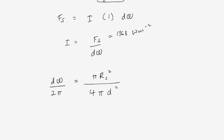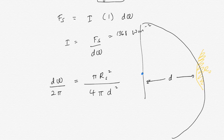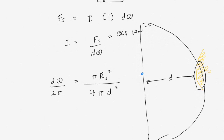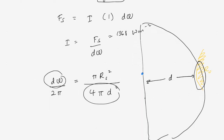Basically, the Earth is here, the Sun is here, this is the distance between the Sun and the Earth, and this is the radius of the Sun. The fraction of the sky covered by the Sun as seen from Earth is just this hemisphere — the area of the Sun over the entire area of the atmosphere — which gives the fraction of the sky, dΩ, over 2π for the hemisphere.